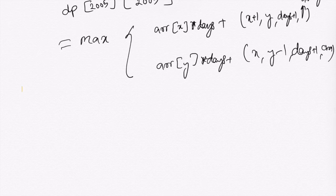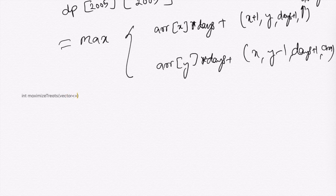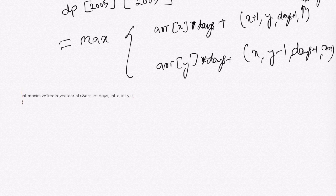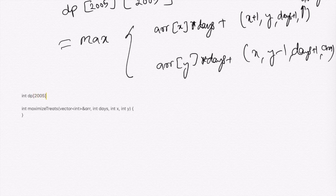Now let's write the code. We define a function called maximizeTreats with parameters: a vector of int called array, int days, int x, and int y. We also declare our dp variable as a two-dimensional array.